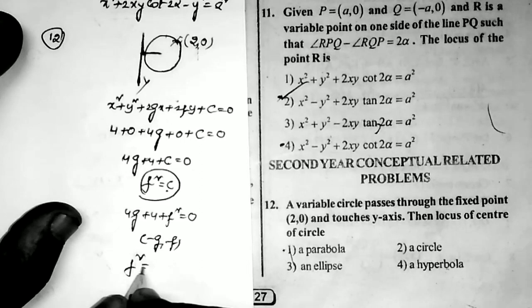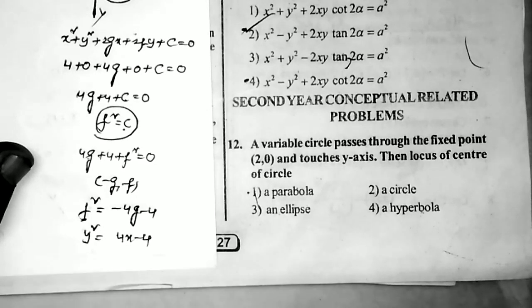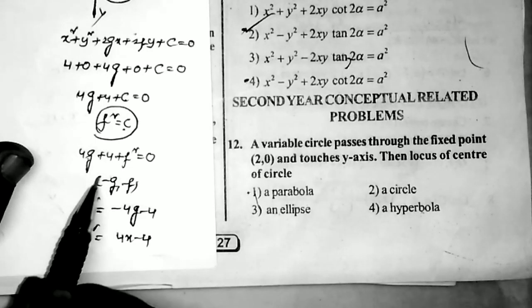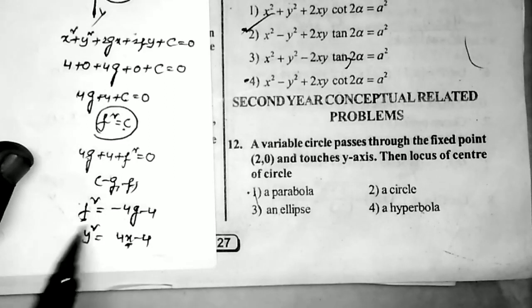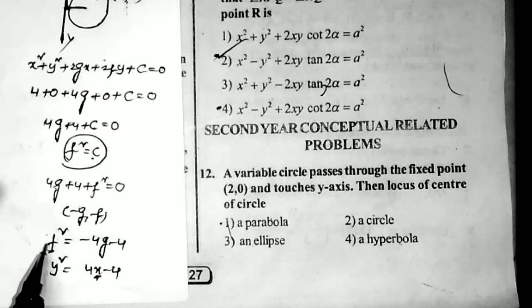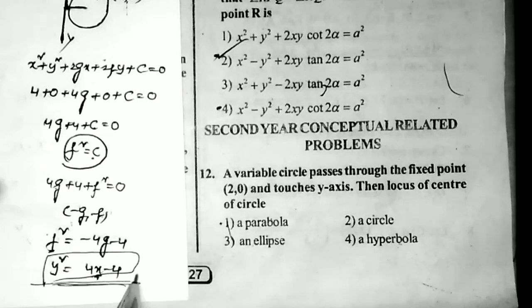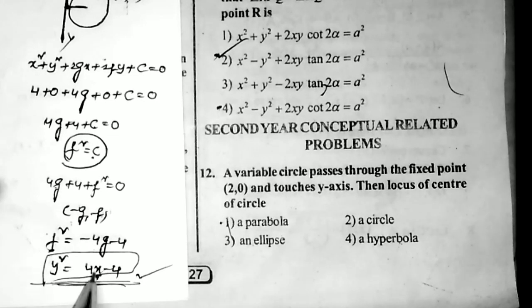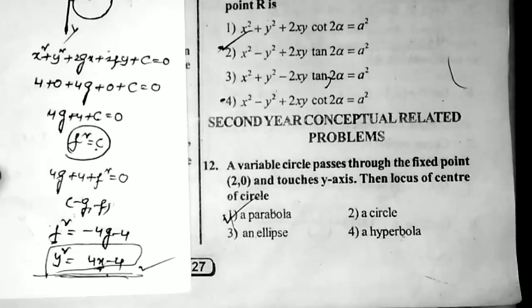The condition for the circle to touch the y-axis is f² = c. Substituting: 4g + 4 + f² = 0, so f² = -4g - 4. The center is (-g, -f) = (x, y). Replacing: y² = 4x - 4. This is a parabola equation, so the locus of the center is a parabola.